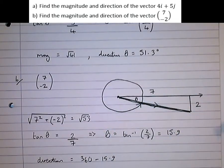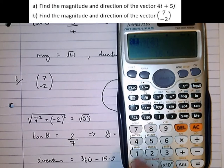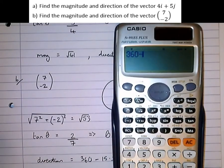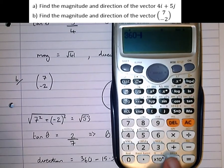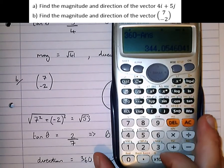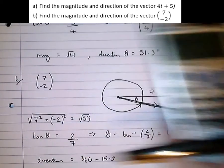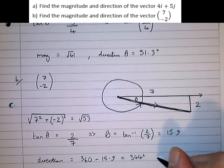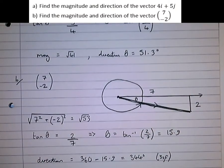Now, notice in the calculator, to save any rounding errors, I'm going to do 360, take, then press the answer button, which uses my previous answer. Which then ends up with 344 degrees to three significant figures. 344 degrees to three significant figures. And that's us done with that example.